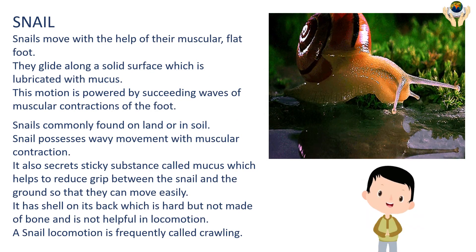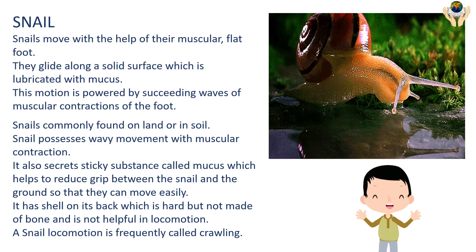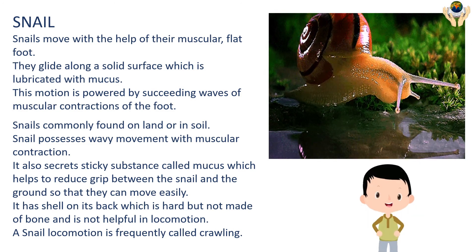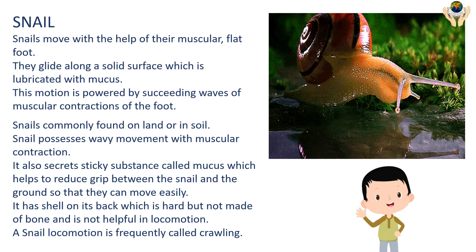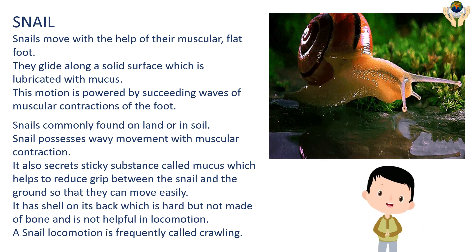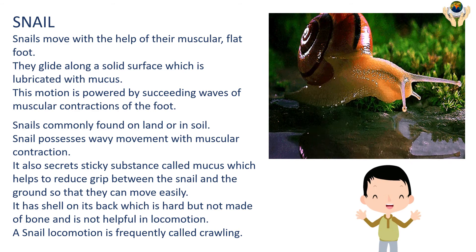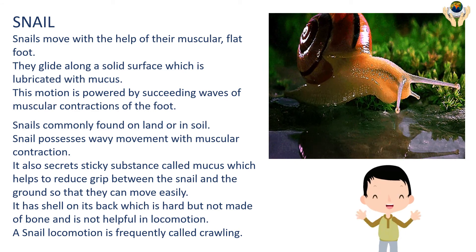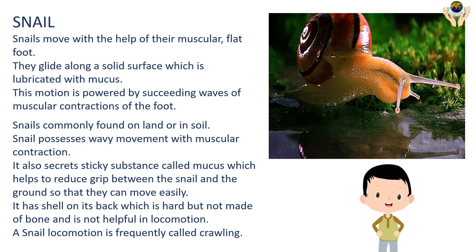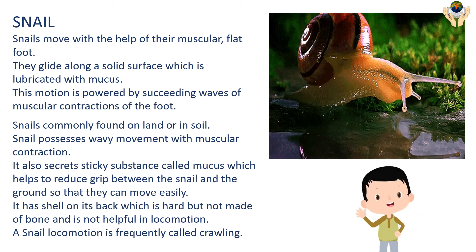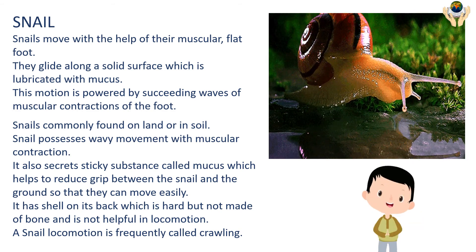Snail: snails move with the help of their muscular flat foot. They glide along a solid surface lubricated with mucus, and this motion is powered by successive waves of muscular contraction of the foot. Snails are commonly found on land or in soil and possess a wavy movement with muscular contraction. They also secrete a sticky substance called mucus which helps reduce friction between the snail and the ground so they can move easily. The snail has a shell on its back which is hard but not made of bone and is not helpful in locomotion. Snail locomotion is frequently called crawling.